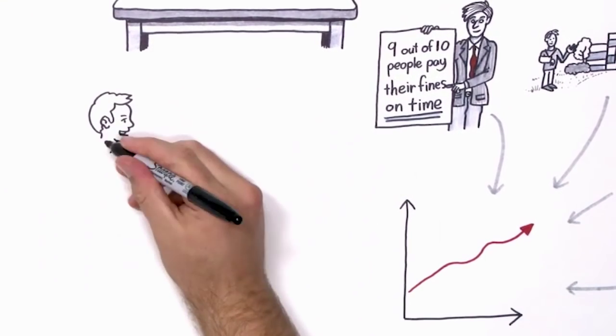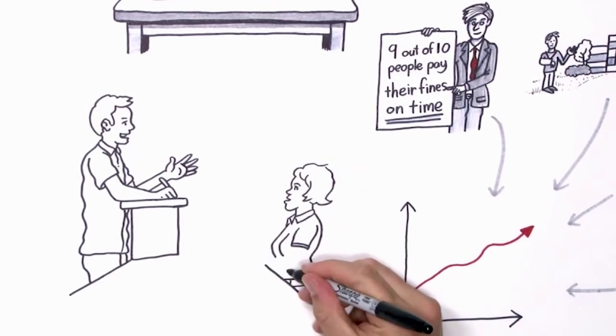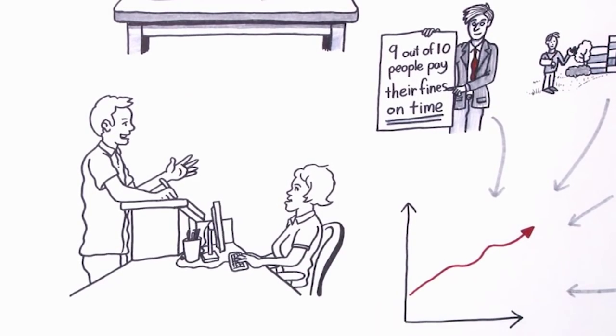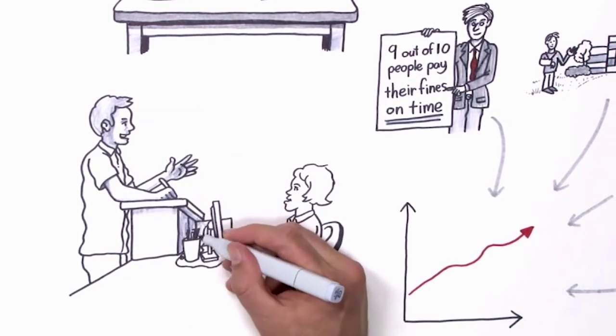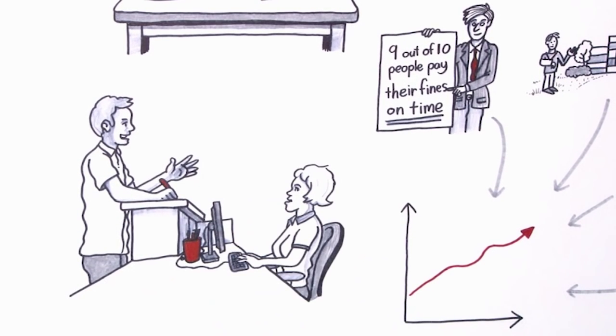In order to design these interventions, we try to understand government services and policies from the perspective of end users and frontline workers. This involves spending time with hospital staff and patients, for example, and asking them about their experiences and ideas for improving services.